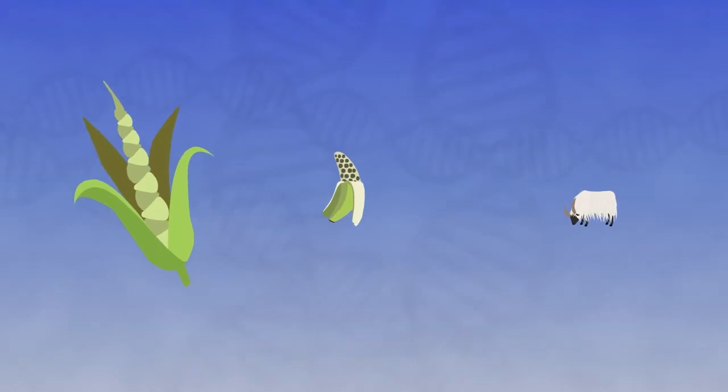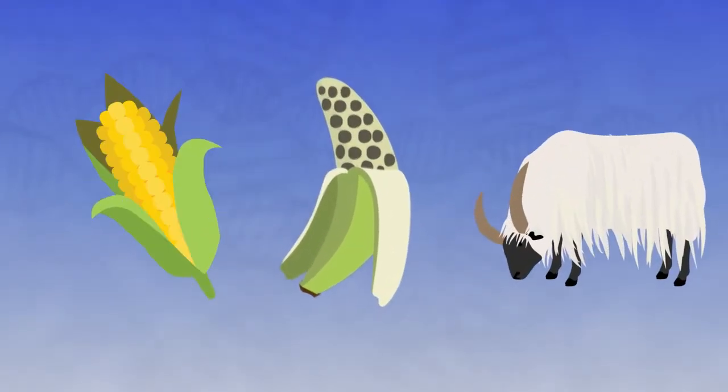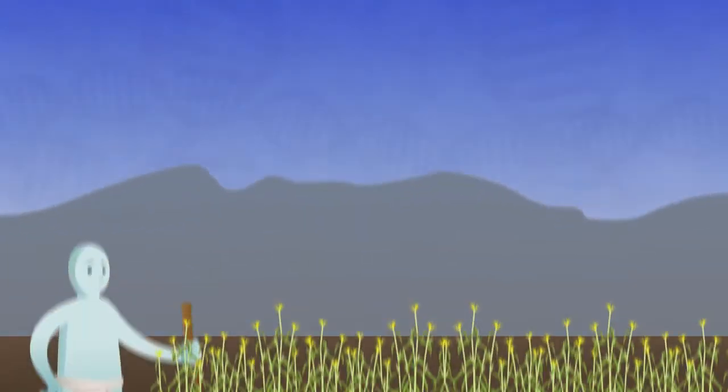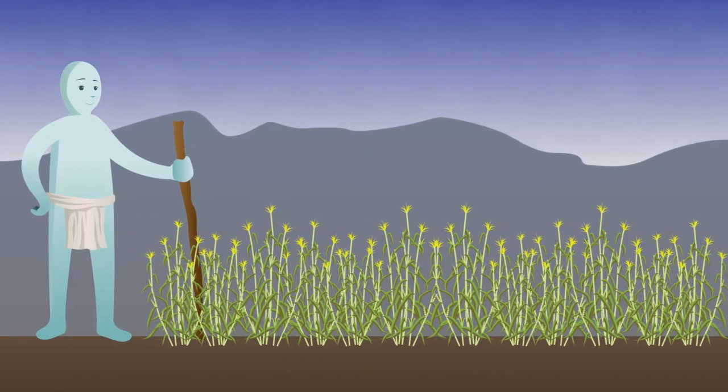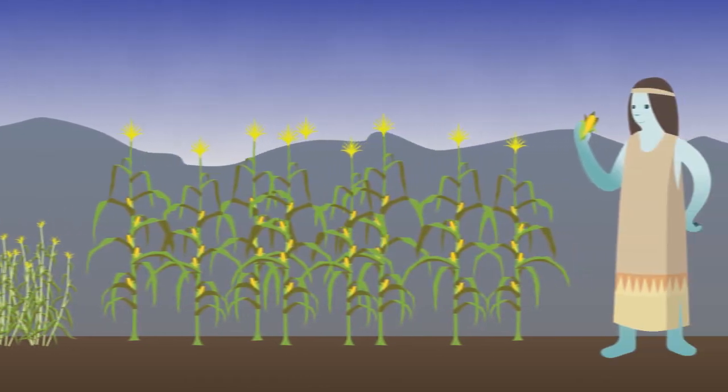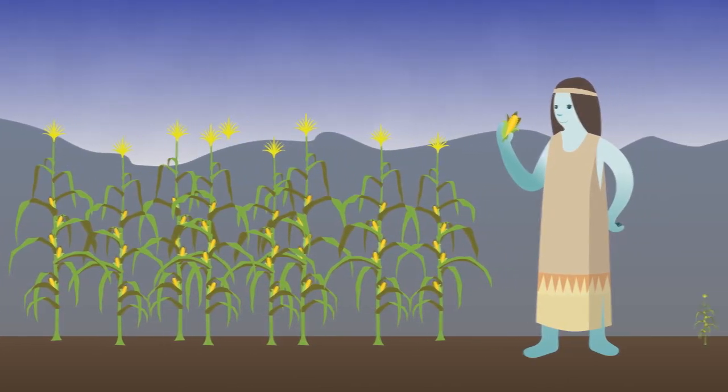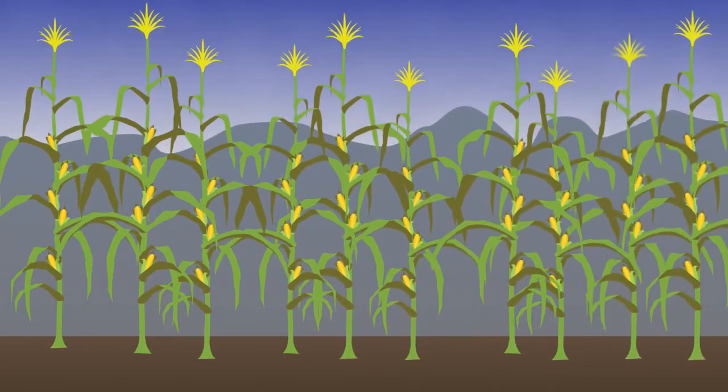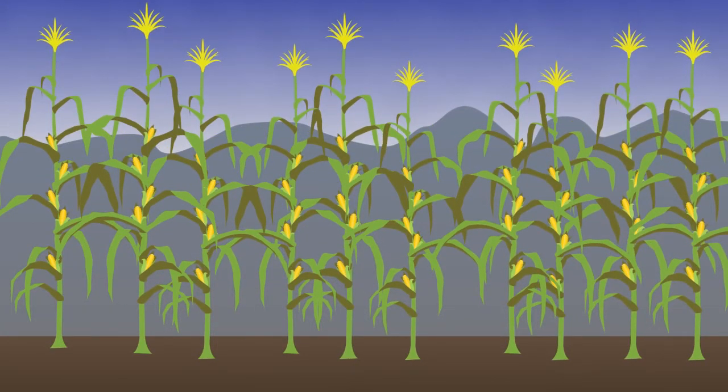In agriculture, genetic variations have been used for centuries to select better versions of crops and animals. Around 10,000 years ago, indigenous American farmers began growing a grass called teosinte, replanting the plants with rare and desirable characteristics, such as a single stalk or a cob with large seeds.